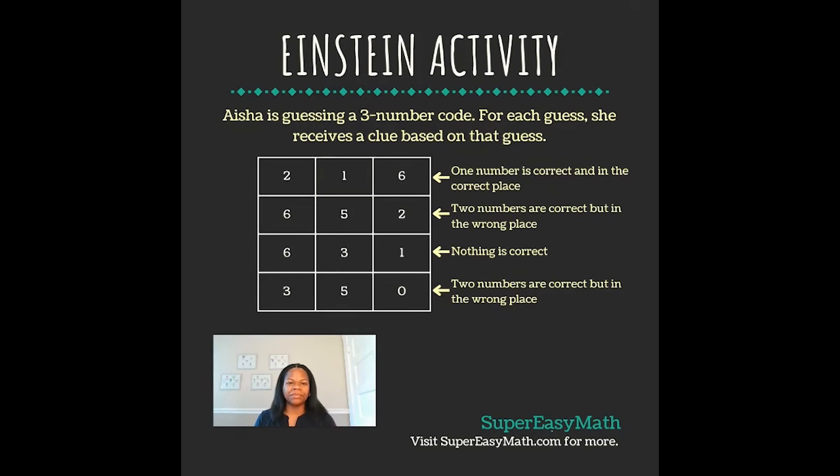Hey guys, it's Tiffany from Super Easy Math. Today's Einstein activity says Aisha is guessing a three-number code. For each guess, she receives a clue based on that guess.